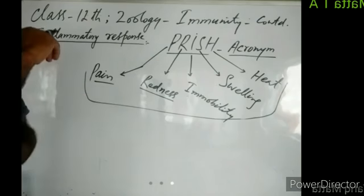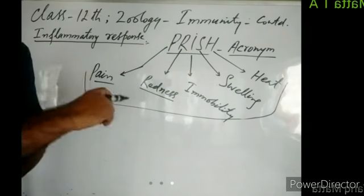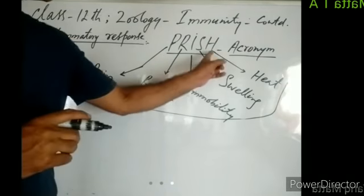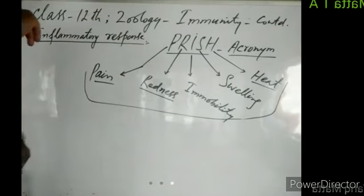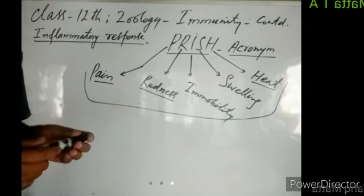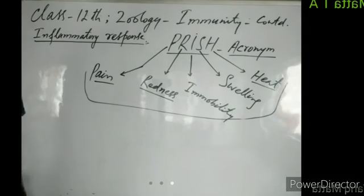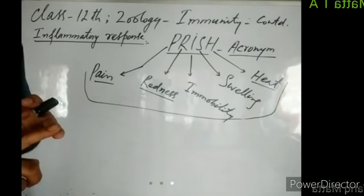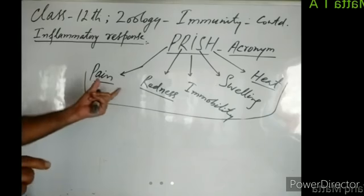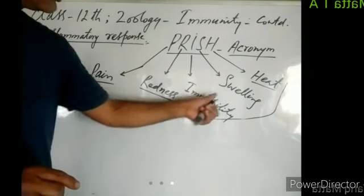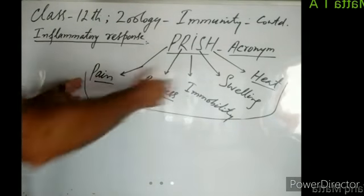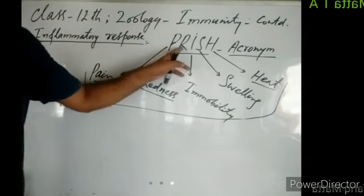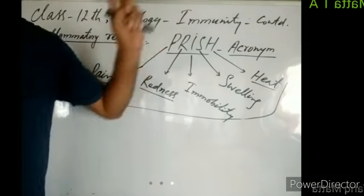At the site of infection or injury, the body develops pain, becomes red, becomes immobile restricting movements, develops swelling, and the tissue becomes hot — characterized by generation of heat. For example, when someone slaps you on the face, you experience hot flashes after the slap. So whenever body tissues get injured or infected, we develop these symptoms: pain, redness, immobility, swelling, and heat. This entire reaction of the immune system is the inflammatory response, characterized by PRISH.